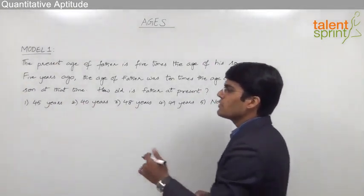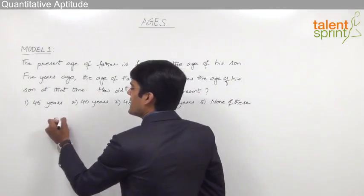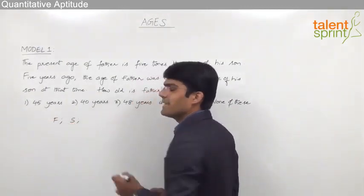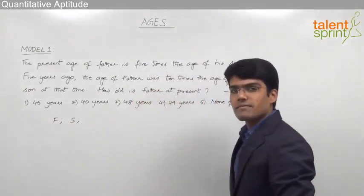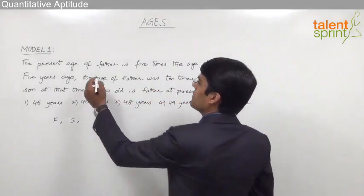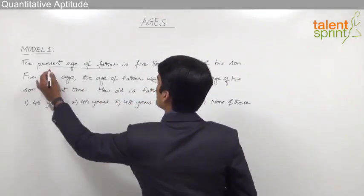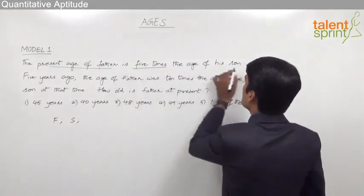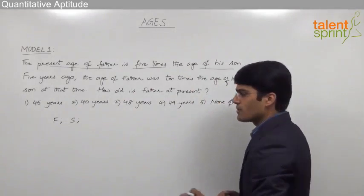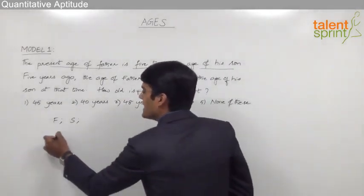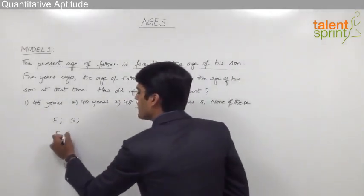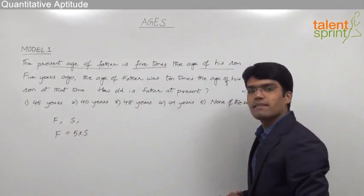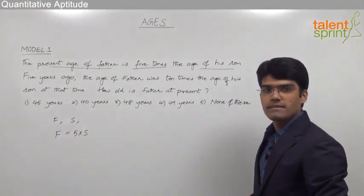Let us assume that the father's present age is F and the son's present age is S. From the first statement, we know that the present age of father is 5 times the age of his son. So we can say that F will be equal to 5 times S.